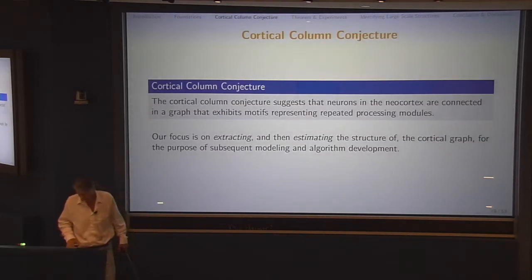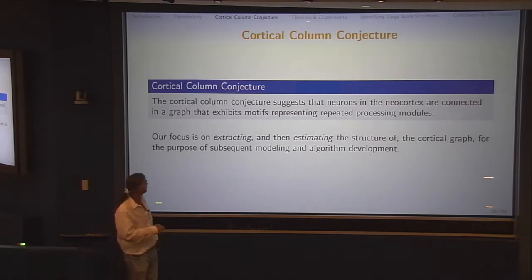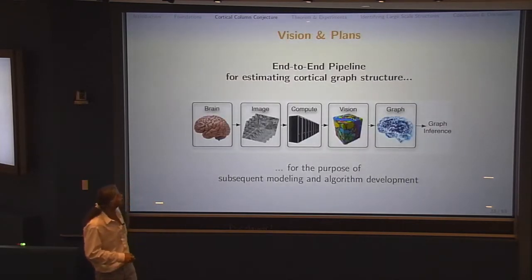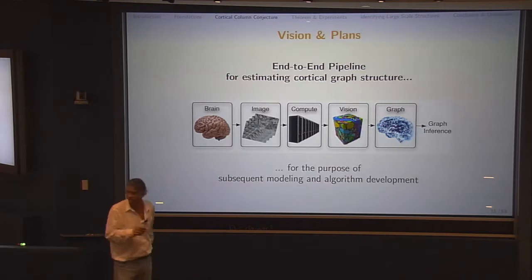If I do the k-nearest neighbor classifier on these extracted embeddings of the graph, we show that you still get Bayes optimal. You still get a universally consistent classifier. The point is that this adjacency spectral embedding preserves not all the information, the convergence might be slower, the finite sample performance might not be as good, but it preserves enough information to do successful consistent statistical pattern recognition.